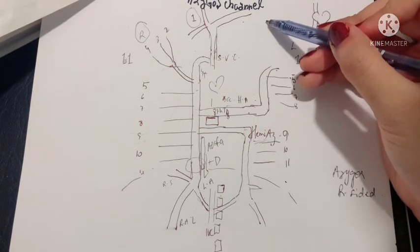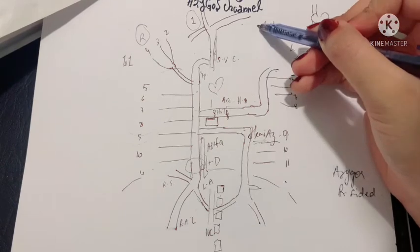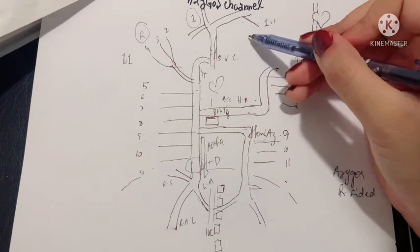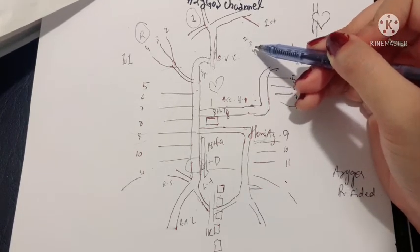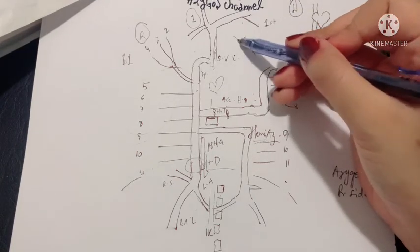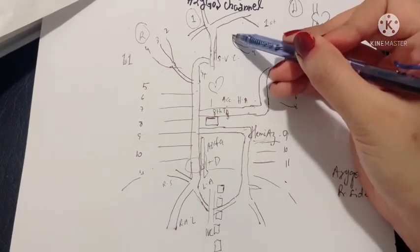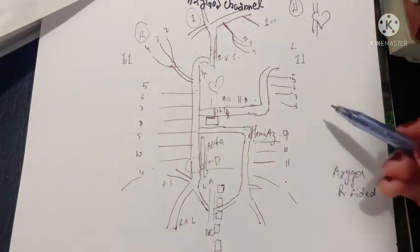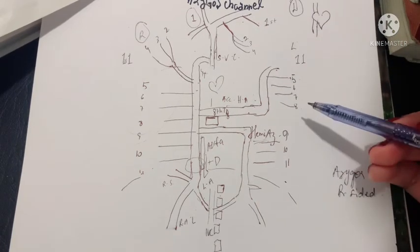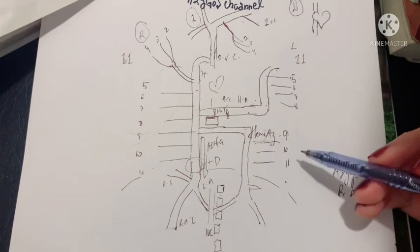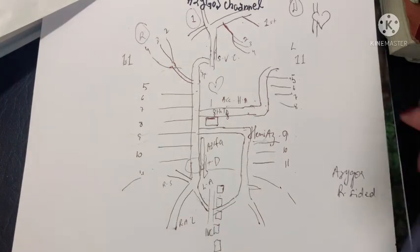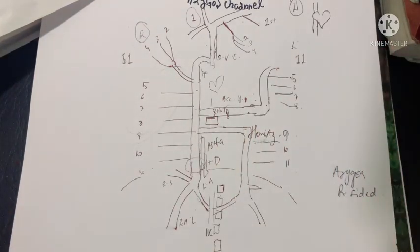On the left side the story is a little different. The 1st posterior intercostal vein drains directly into the left brachiocephalic vein. The 2nd, 3rd, and 4th posterior intercostal veins form the left superior intercostal vein which drains into the brachiocephalic vein. The 5th to 8th drain into the accessory hemi azygous, and the 9th to 11th drain directly into the hemi azygous vein, which eventually reaches the heart. This was the brief understanding of your azygous venous channel. Thank you so much for watching.